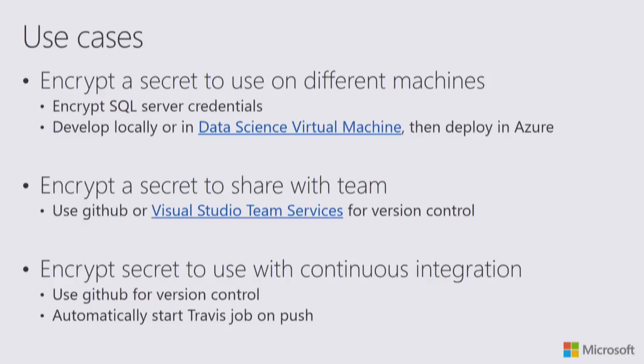You have to be a little bit careful there, because if somebody issues a pull request, Travis will build it — and somebody could potentially inject code in the pull request that asks Travis to just print the secret to the console. So be careful with this, but I think it's a very interesting use case to use secrets with continuous integration tools.